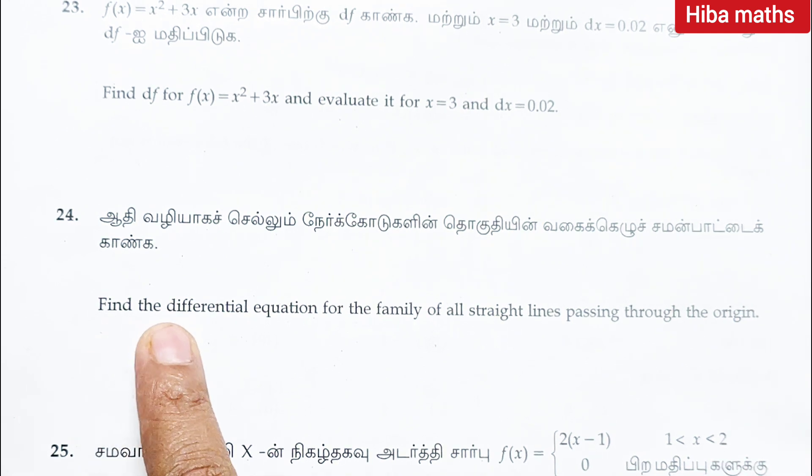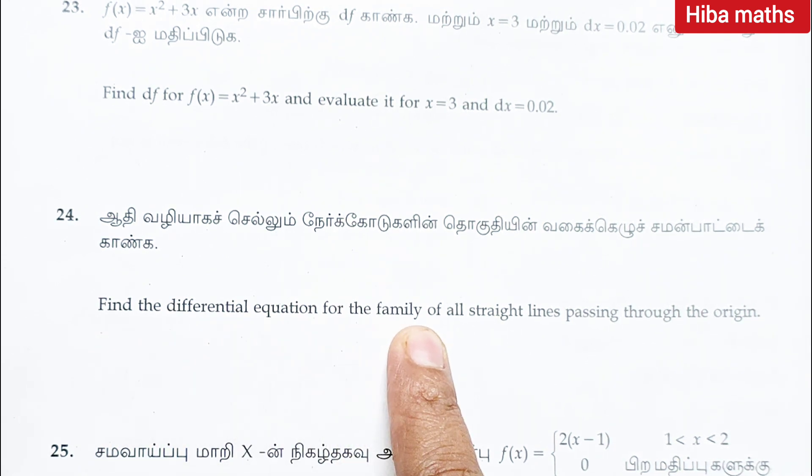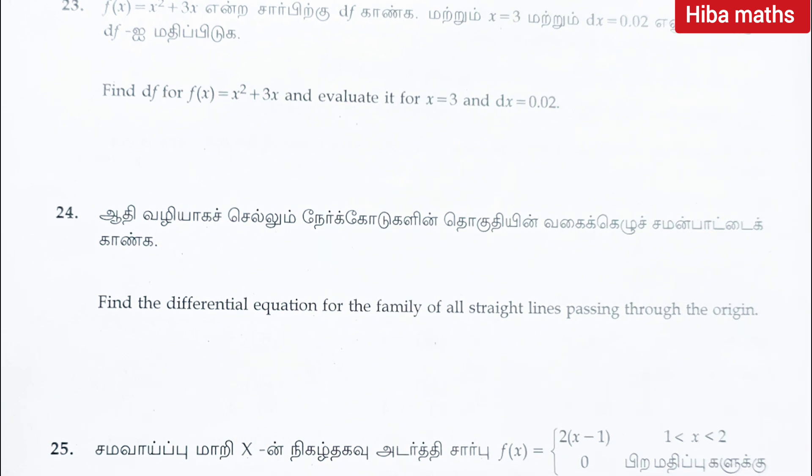Question 24: find a differential equation for the family of all straight lines passing through the origin.